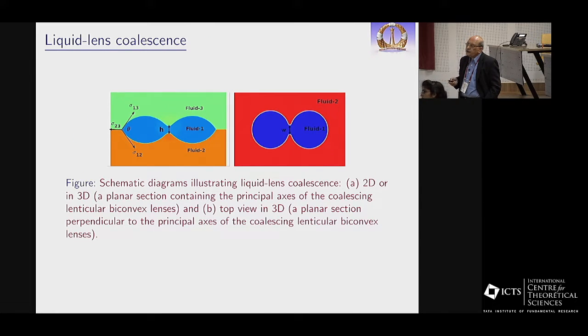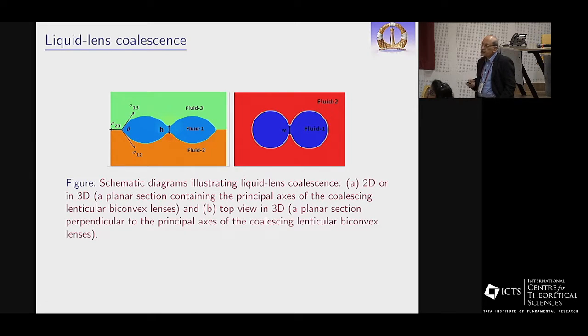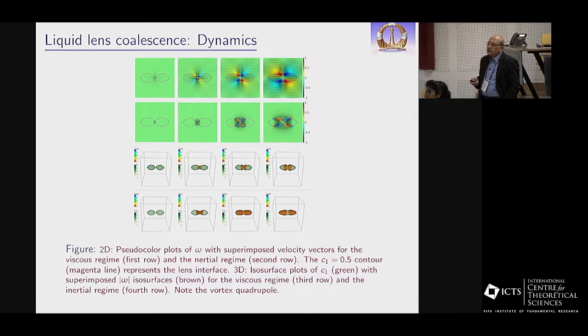It's known from experiments that if two spherical droplets coalesce, a neck forms and the height goes as t^(1/2) in the viscous regime and t^(1/2) in the inertial regime. For two liquid lenses, it's t^1 in the viscous regime and t^(2/3) in the inertial regime. There are some theories around but none that can go cleanly from one to the other including the crossover regime. Here is fluid 1, fluid 2, fluid 3; we can control the surface tensions and there is that angle θ.